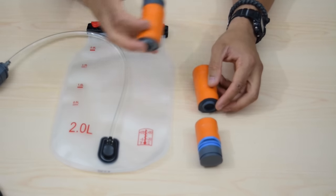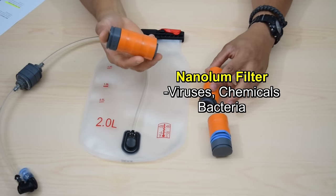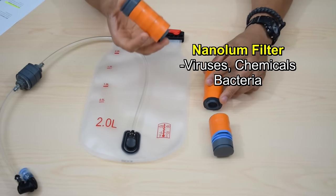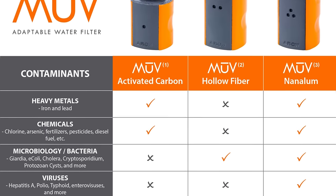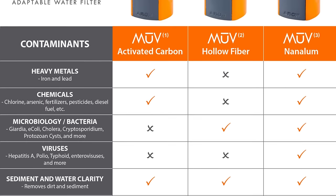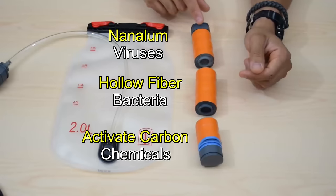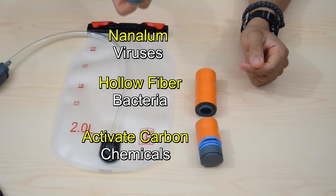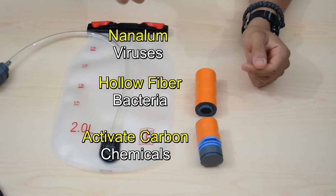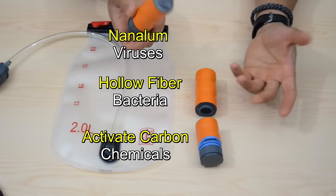And finally, you're going to have your nanolume filter, which is going to filter out pretty much everything with a main emphasis here on viruses. So you have your chemicals, your bacteria and your viruses, and this is actually going to filter out chemicals and bacteria as well. You may be asking yourself, why aren't they all this nanolume filter, which is the one that pretty much removes everything.